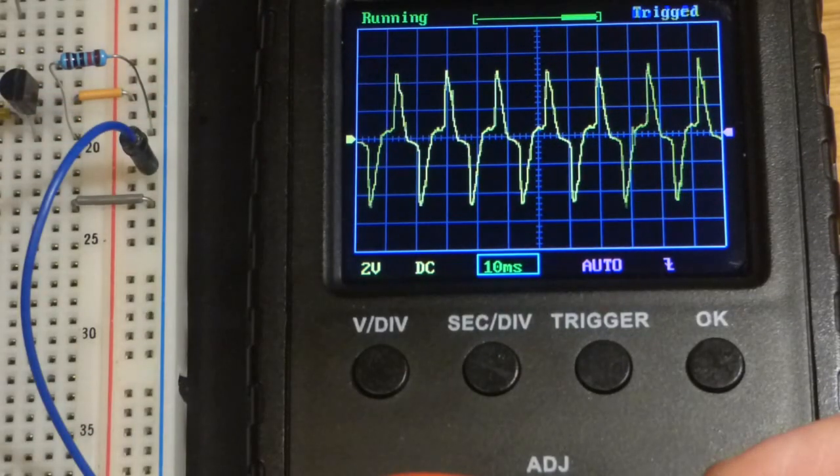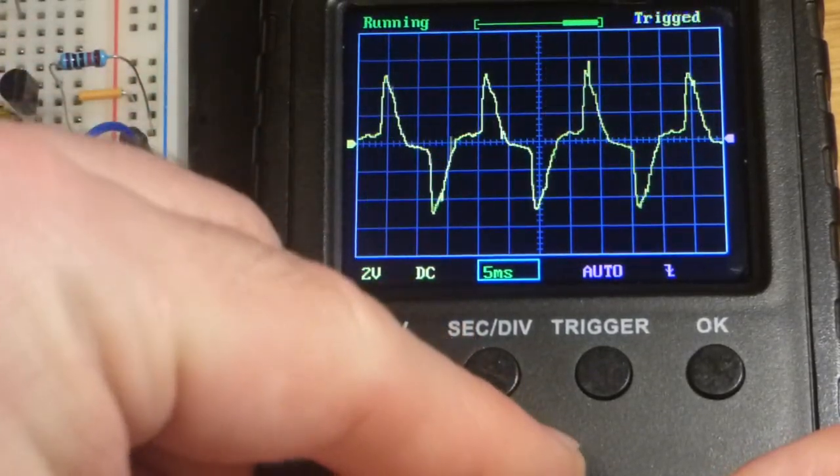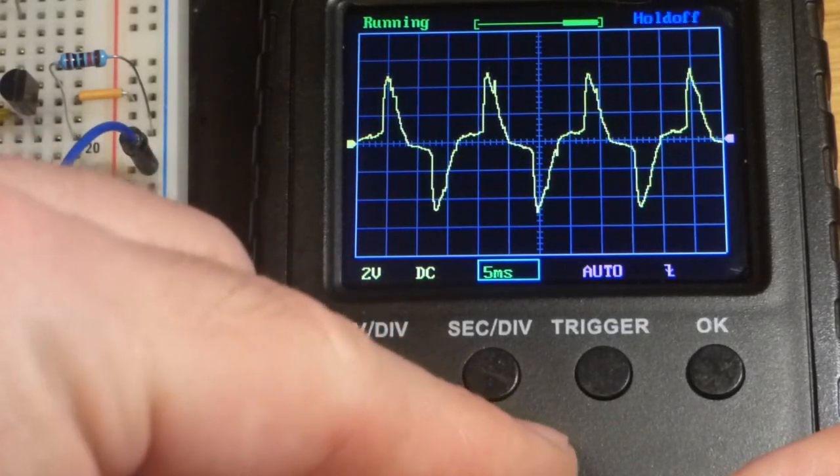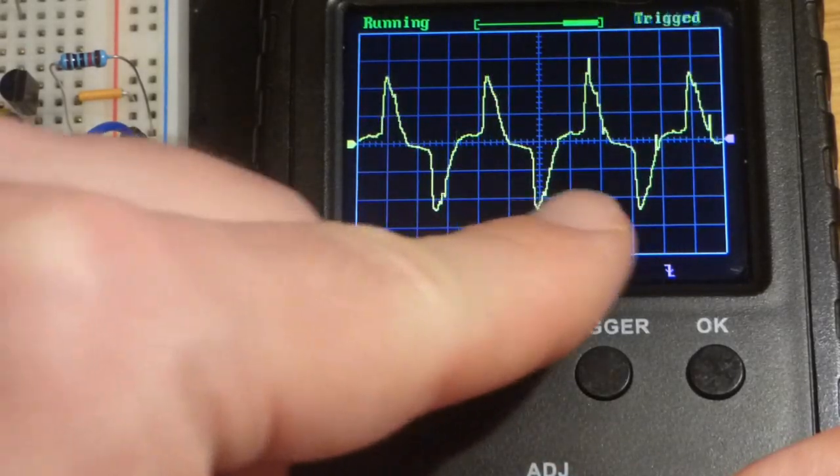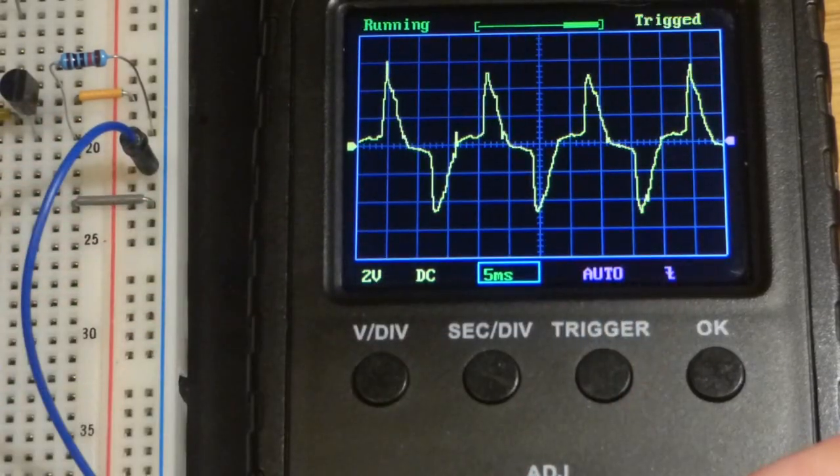So it looks like a little bit more than every 10 milliseconds, and then 5 milliseconds - you can see that that's per division. So 1, 2, 3... it looks like a little bit more than every 15 milliseconds it takes for a wave.